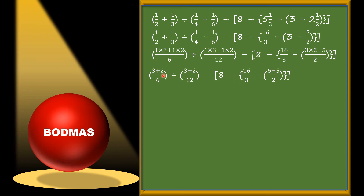So now we have 5/6 ÷ 1/12 minus the big bracket containing: 16/3 minus curly bracket minus 1/2. Now here are two brackets remaining: curly bracket and big bracket. According to the rule, we need to solve the curly bracket first.